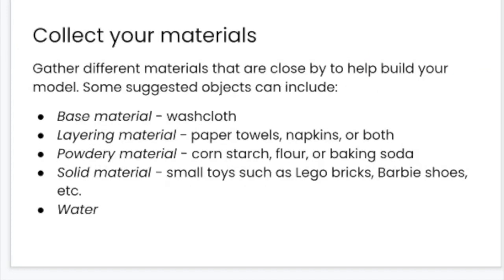The first thing we need to do is collect our materials. Pause the video and gather the different materials you will need. You will need a base material such as a washcloth or wash rag, layering material like paper towels or napkins, and some kind of powdery material such as cornstarch, flour, or baking soda that you may have in your kitchen. Choose something that won't dissolve when it gets wet.